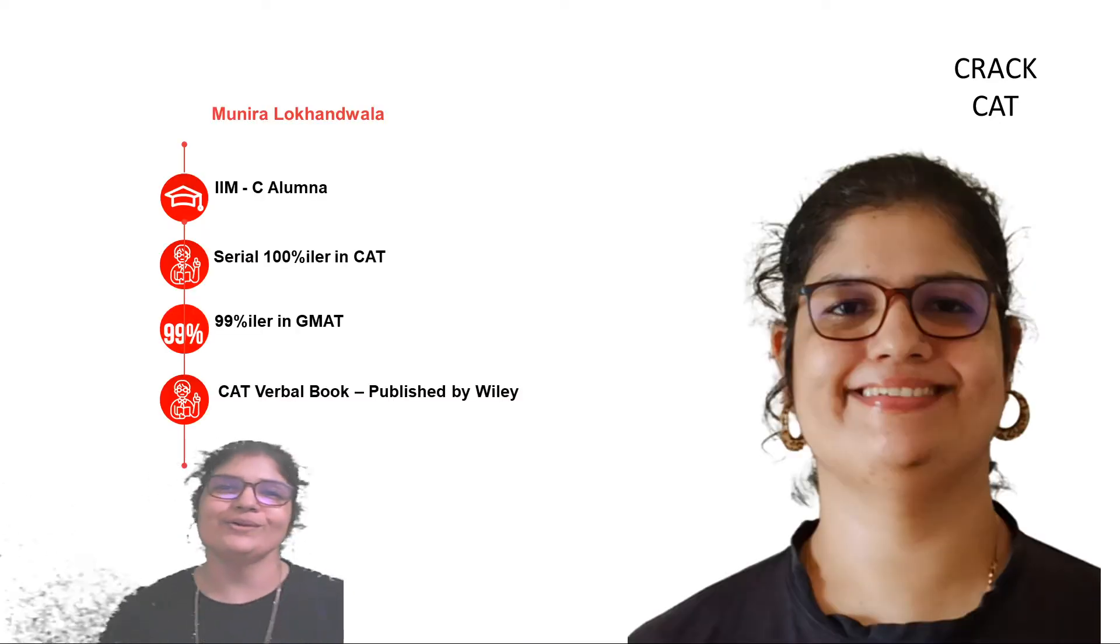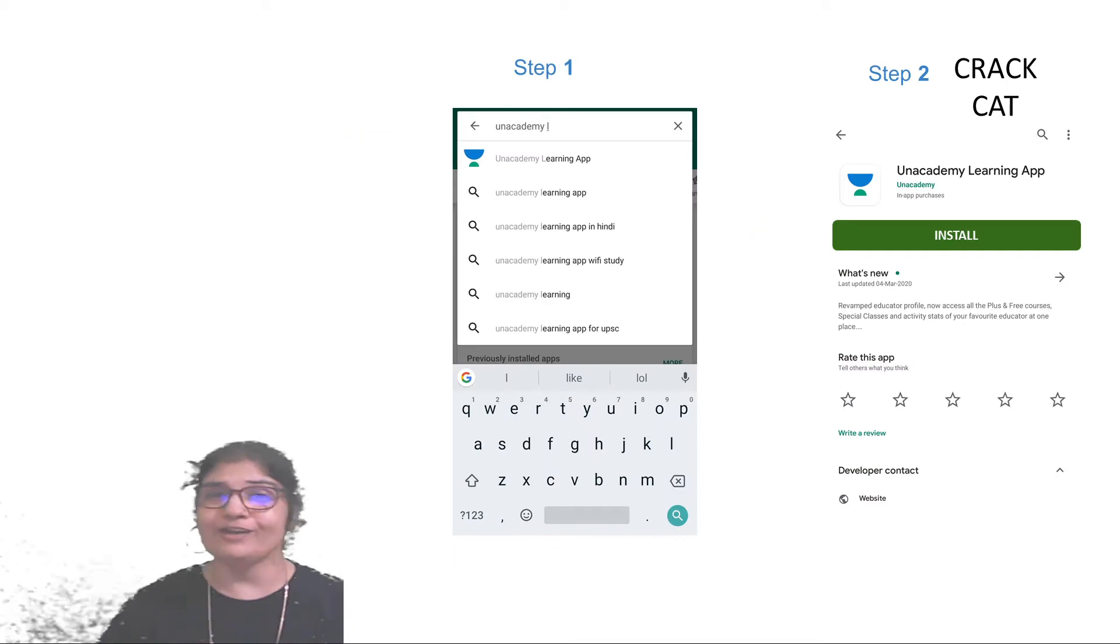Hi, I'm Munira Lokhanwala and I'm a Calcutta alumna, a 100 percentiler in the CAT and a 99 percentiler in the GMAT. I also have a CAT global book published by Wiley and available on Amazon. I'm also doing a lot of sessions on the YouTube Crack CAT channel. This is the channel on which the video is here. I'm also doing a lot of plus and special classes on the Unacademy app.